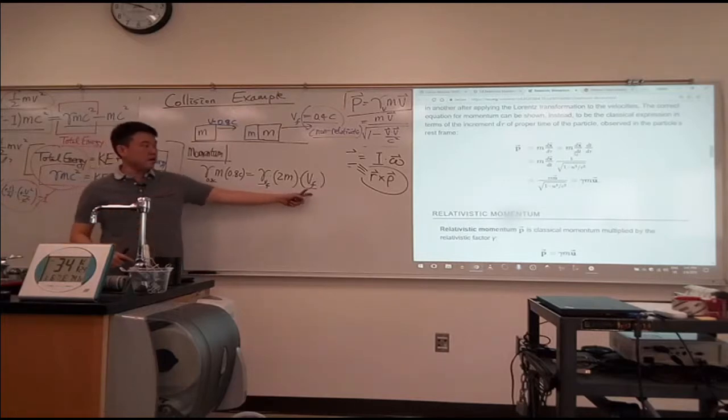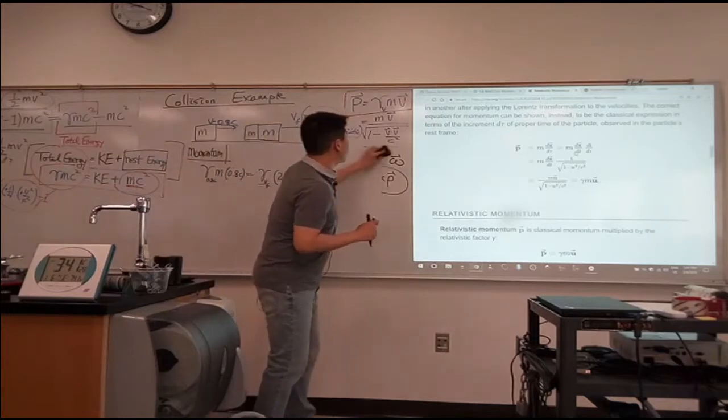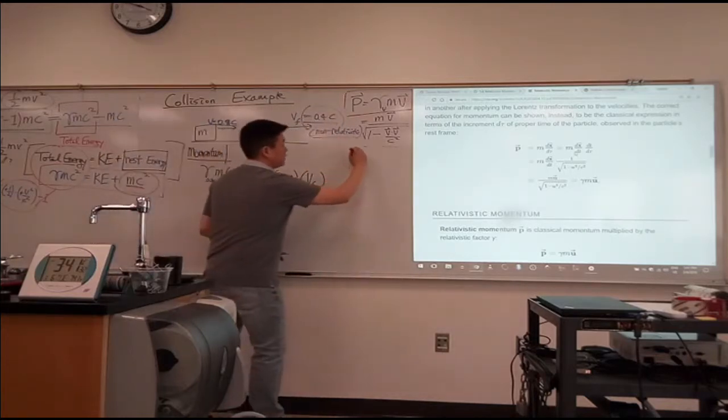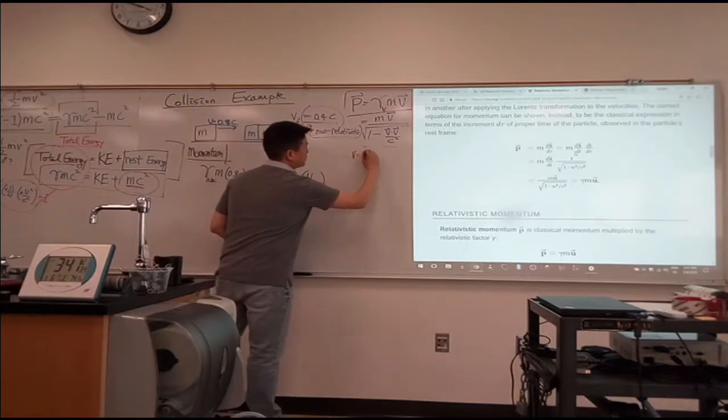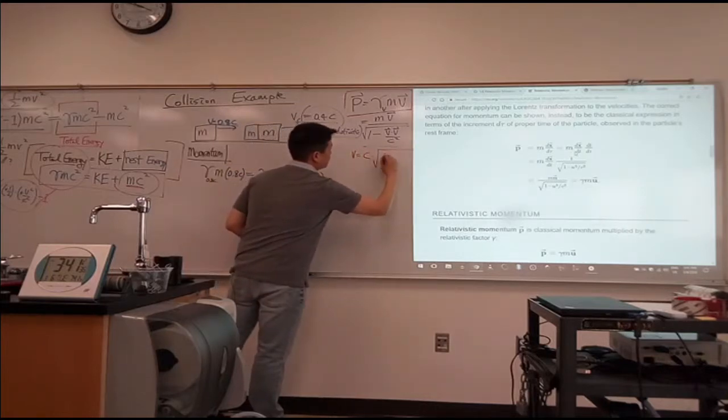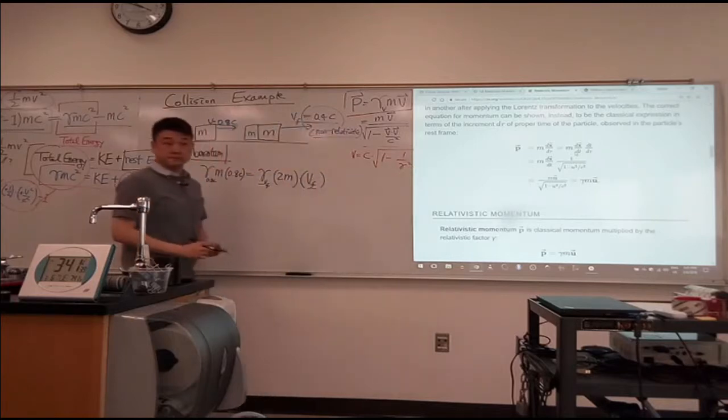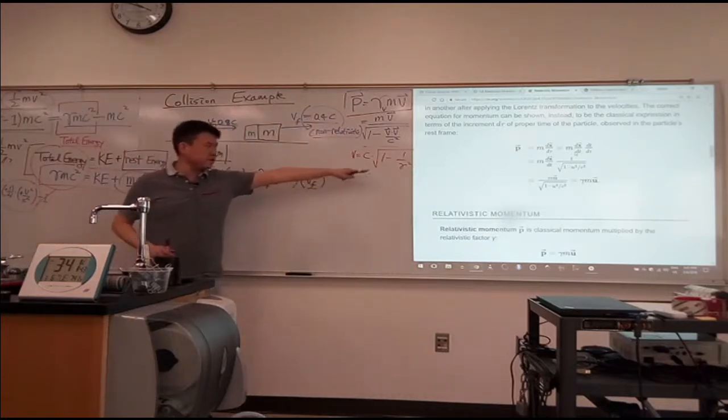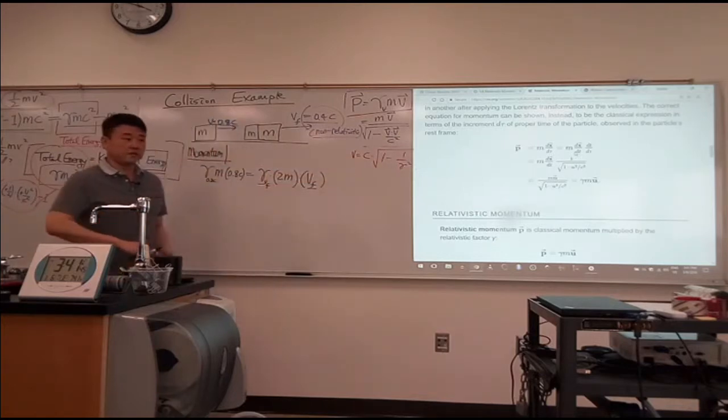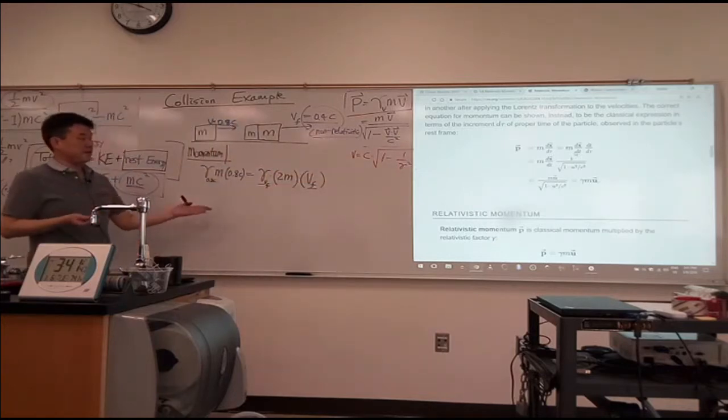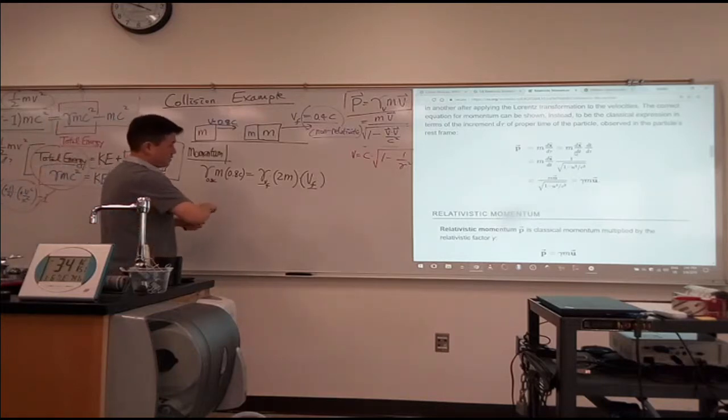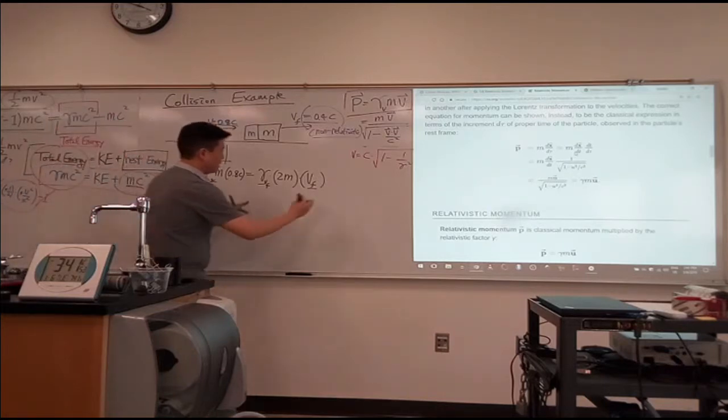No. You have 1 unknown because these 2 are depending on each other. In fact, let me rewrite that expression for V in terms of gamma again. So V in terms of gamma was C times the square root of 1 minus 1 over gamma squared. Right?